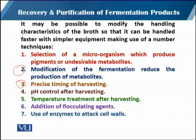Then there is pH control at the time of harvesting. Sometimes when we stop the upstream process, we do not pay attention to the pH drift. When there is a drift in pH, that can have an adverse effect on the nature of our product — sometimes a product that is insoluble will become soluble with a change in pH, creating hindrance and increasing the cost of harvesting. Then there is temperature treatment after harvesting.